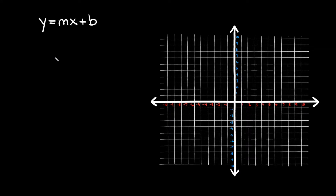You've probably learned a few different ways to graph a straight line by now, and this is just another one. The slope-intercept form equation is y is equal to mx plus b.